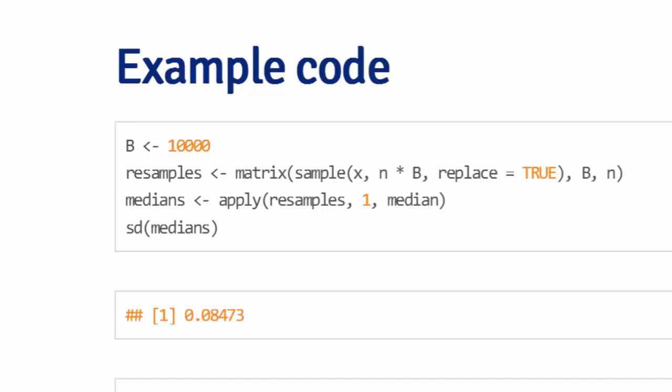So if I want to draw b complete data sets with replacement from x, then I need n times b draws. The R command sample does this, where it's x as the vector that I'm sampling from, n times b, the number of times that I want to draw from it, and replace equals true. In this case, if I didn't have replace equal true, it would give me an error, because you can't draw n times b elements from x, which only has n elements, without replacement.